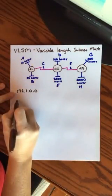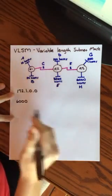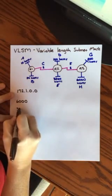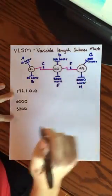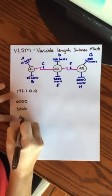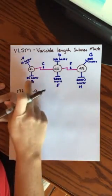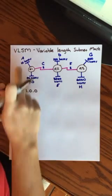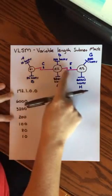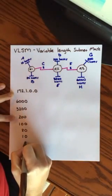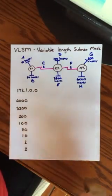So what you need to do first is you need to determine the networks that you have from greatest to least. So I have a 6,000 host network. Let me do my first one. Then I have 3,200 hosts. Then I have 200, 100, 80, and then 10. Then I have two WAN links right here, so those two. They both require two IP addresses.